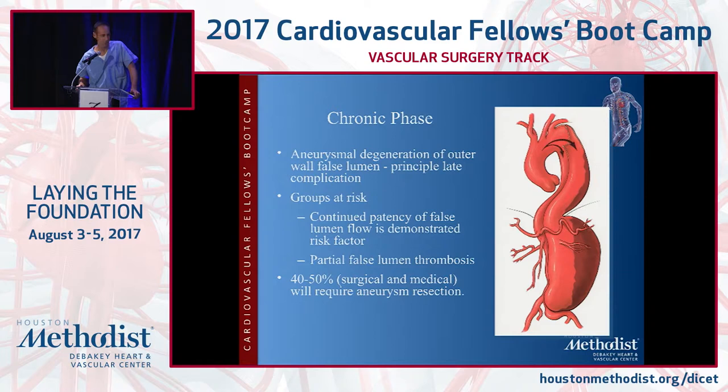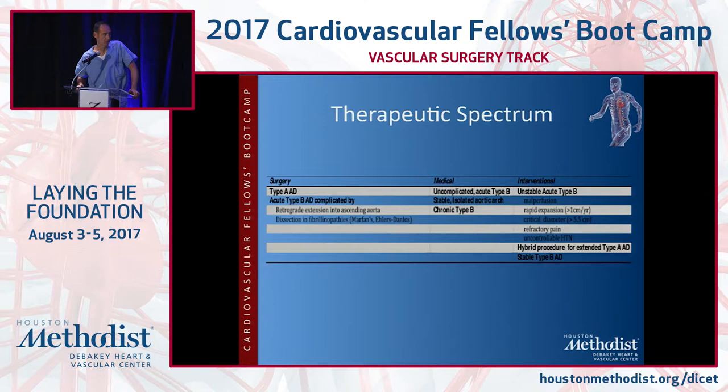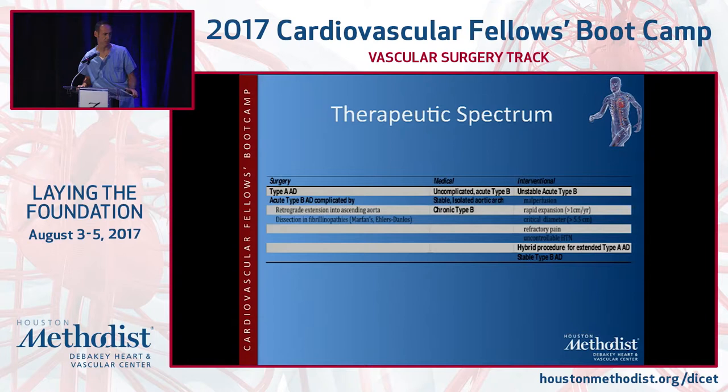The therapeutic spectrum: for surgery, obviously all type A dissections get surgery. You can have acute type Bs with retrograde dissection — stenting can be one of the complications, converting it to an open operation. For most patients, they will go through medical therapy for uncomplicated type Bs. For most complicated or unstable acute type Bs, the interventional modality is primarily TEVAR or some combination of fenestration.